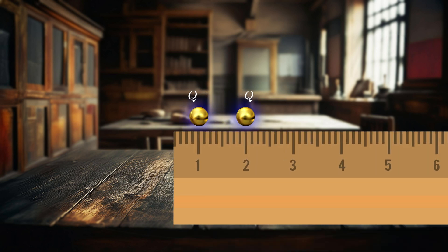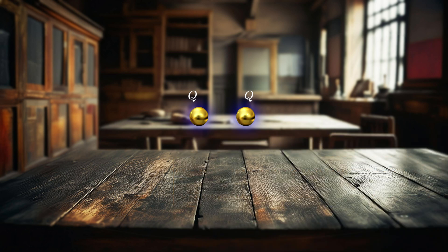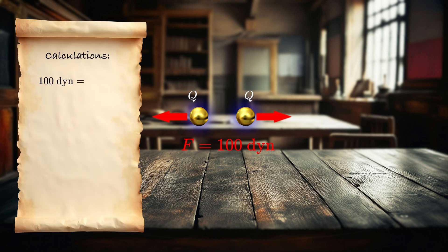Let's place them at distance of one centimeter from each other for simplicity and measure the force. Let's say we measure 100 dyne of force. Then we can easily calculate that each body has charge of 10 Franklin. But that is kind of unsatisfactory.